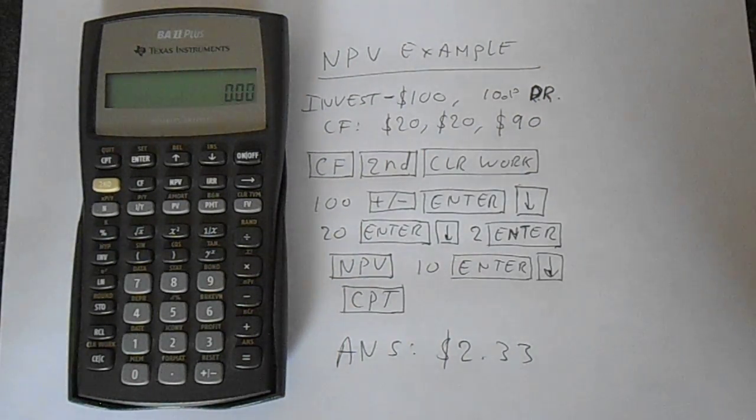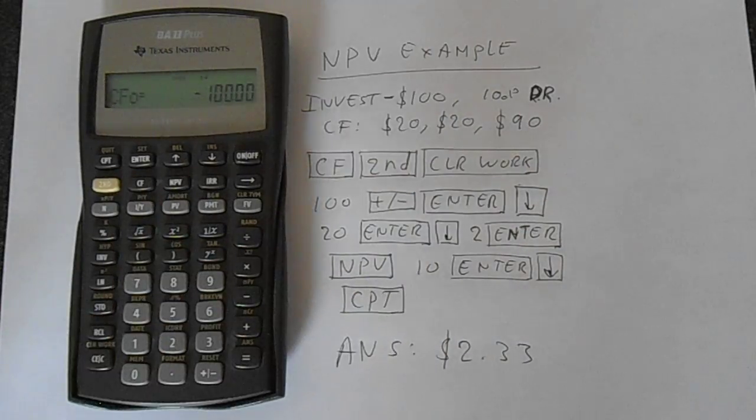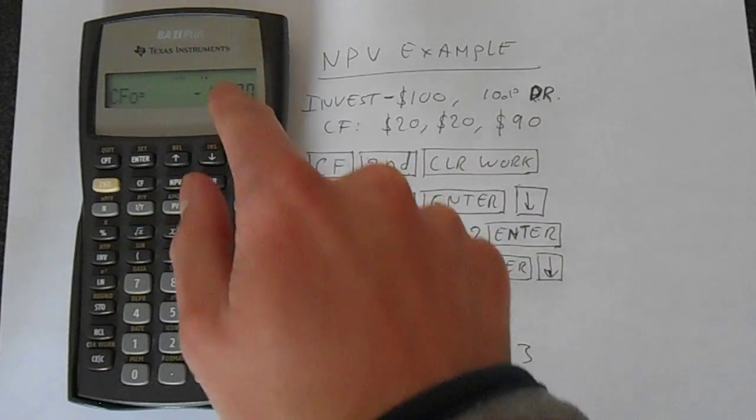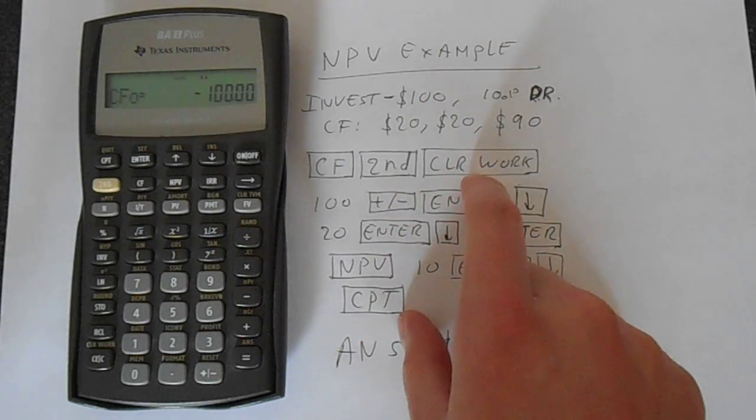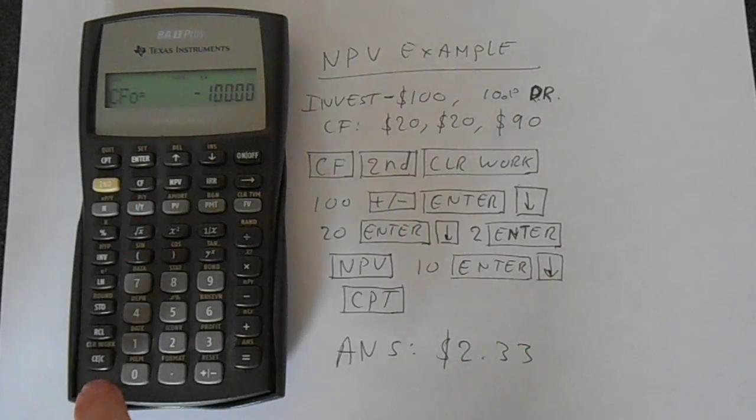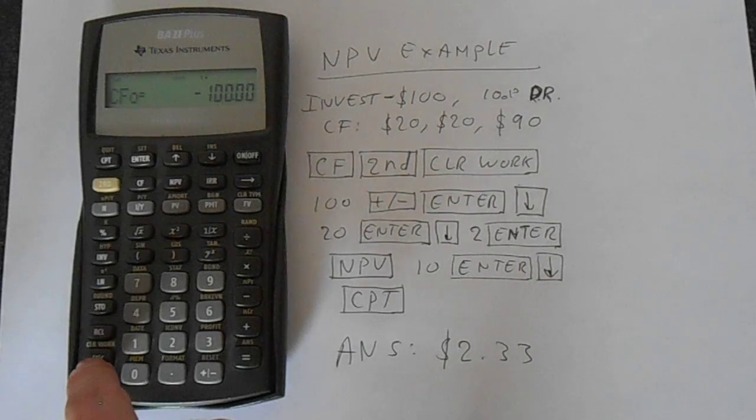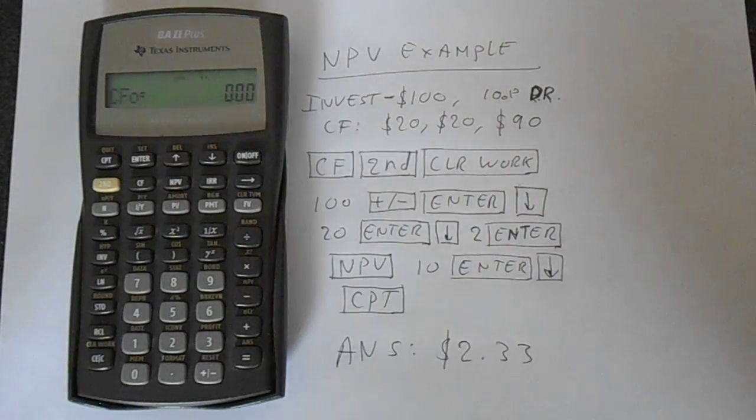The first thing we have to do is clear the cash flows. So we go to cash flow—you see I've already got this example in here, we need to clear that. So we go second function and then clear work. Second function and clear work is right down at the bottom left-hand corner, and that's that cleared.